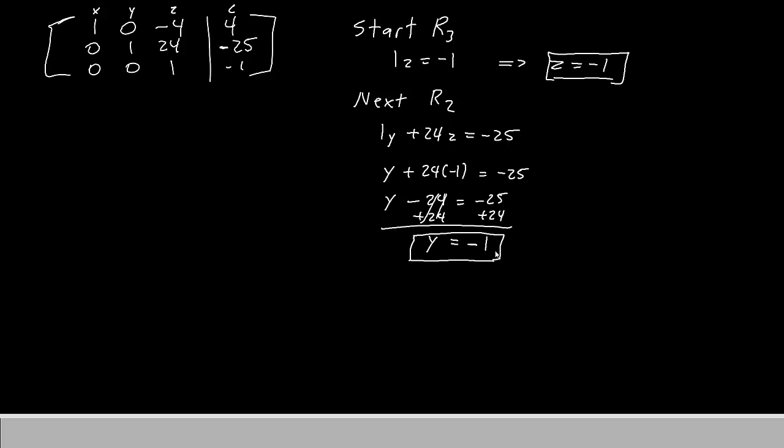Now that we have y and z, next we go to the top row. Go to row 1. Row 1 says 1x plus 0y minus 4z equals 4. So we'll write 1x. We'll leave out y minus 4z equals 4. Then we replace z with the z that we already know. So we'll have x minus 4 times negative 1 equals 4. If we simplify, we'll have x plus 4 equals 4. Subtract 4 from both sides. And everything cancels out. Therefore, all we're left with is x equals 0.